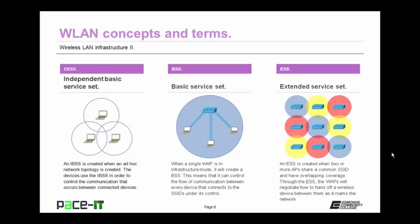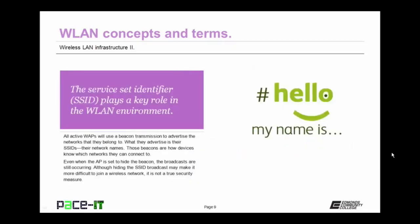Then there's the ESS, or Extended Service Set. An ESS is created when two or more access points share a common SSID and have overlapping coverage. Through the Extended Service Set, the WAPs will negotiate how to hand off a wireless device between them as it roams the network. The SSID, or service set identifier, plays a key role in the wireless LAN environment. All active wireless access points will use a beacon transmission to advertise the networks that they belong to — their SSID, which can also be thought of as their network name. Those beacons are how devices know which networks they can connect to.